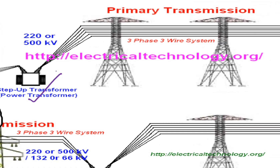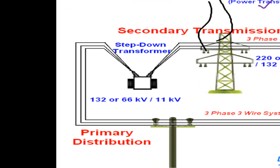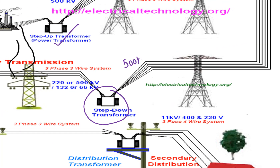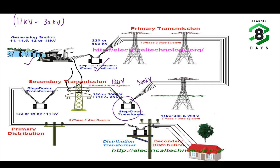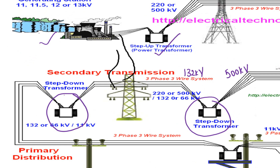This is the primary transmission. Then there is a step-down transformer at a substation where the voltage is stepped down from that high voltage to a medium voltage — for example, from 500 kV down to 132 kV. Secondary transmission then occurs at 132 kV. In the vicinity of any town or city, there would be another step-down transformer in a substation, stepping the voltage down from 132 kV to 33 kV or 11 kV.